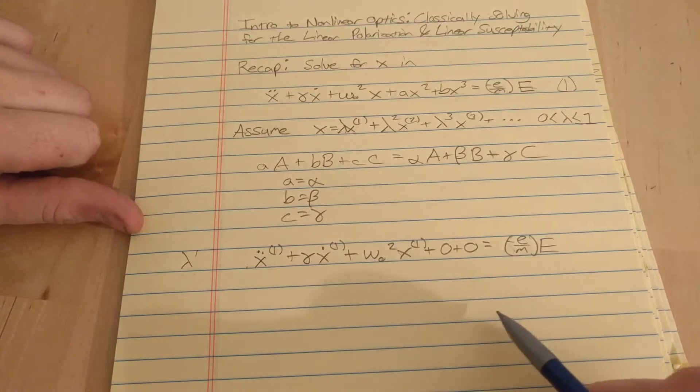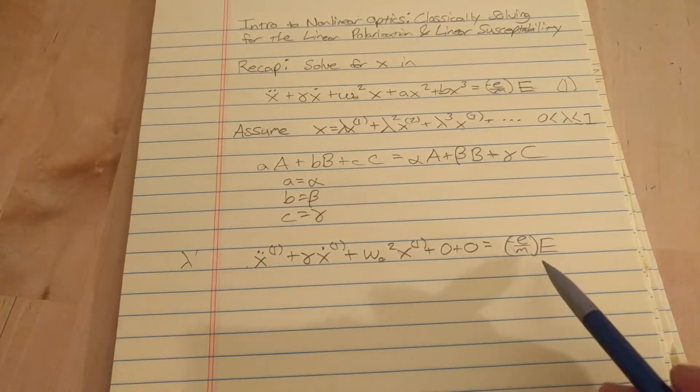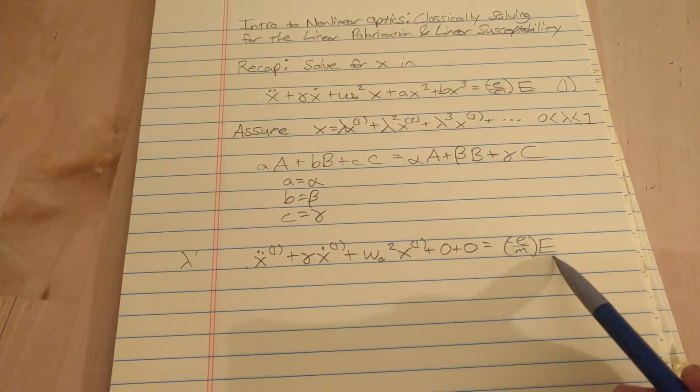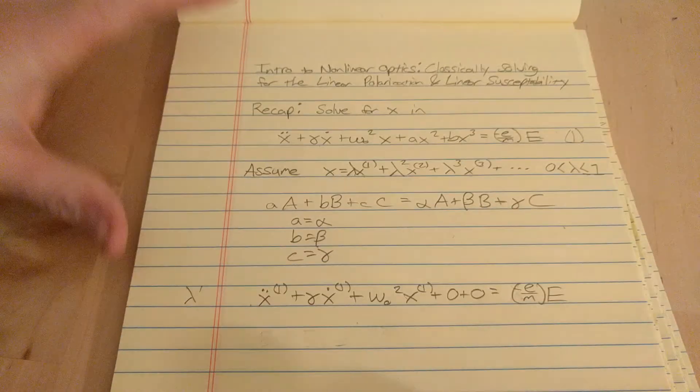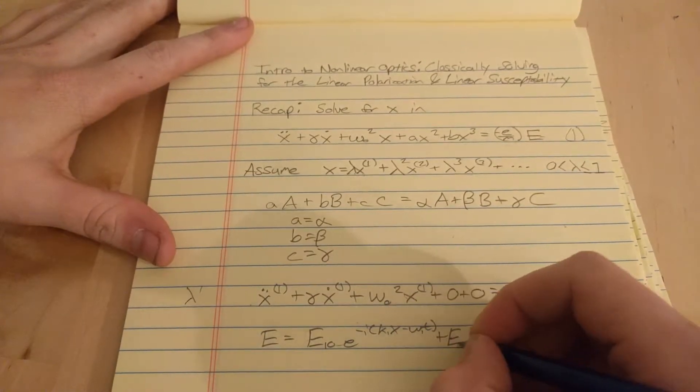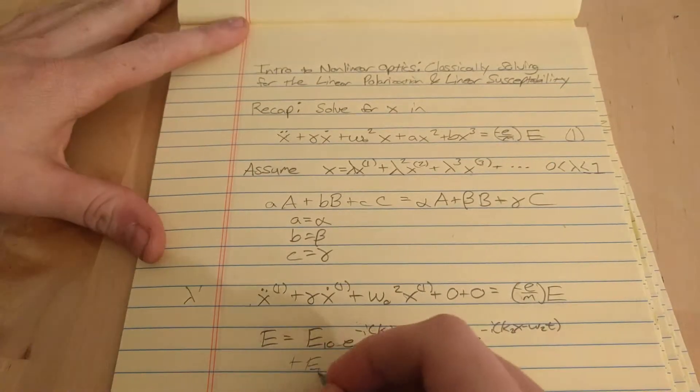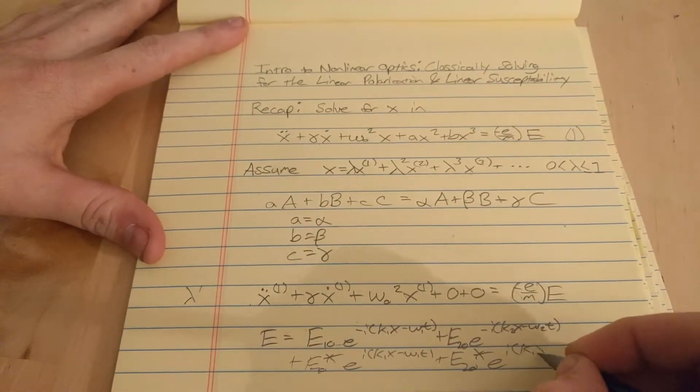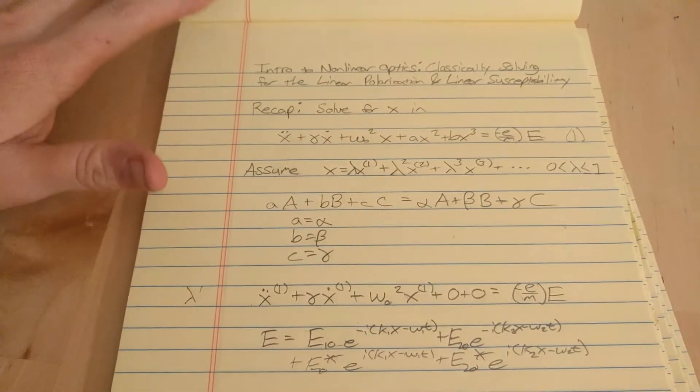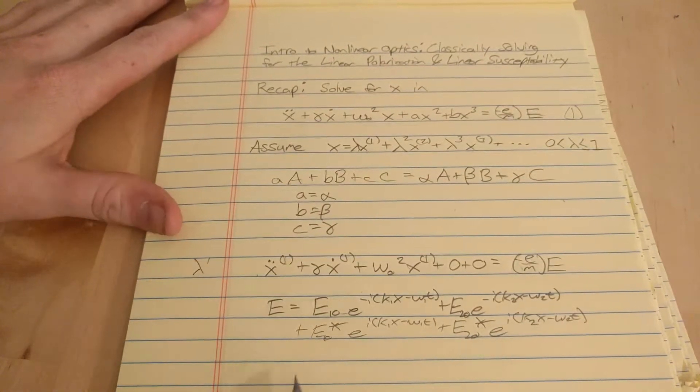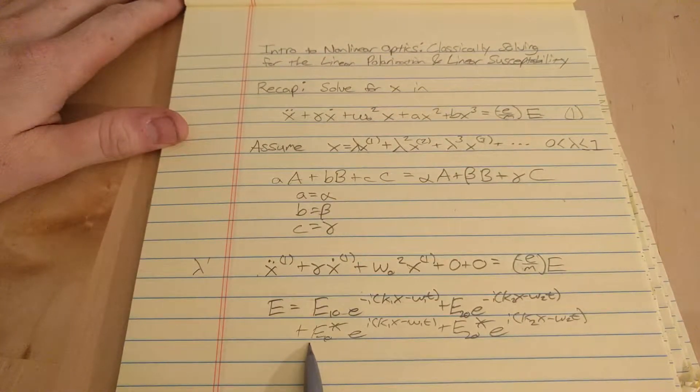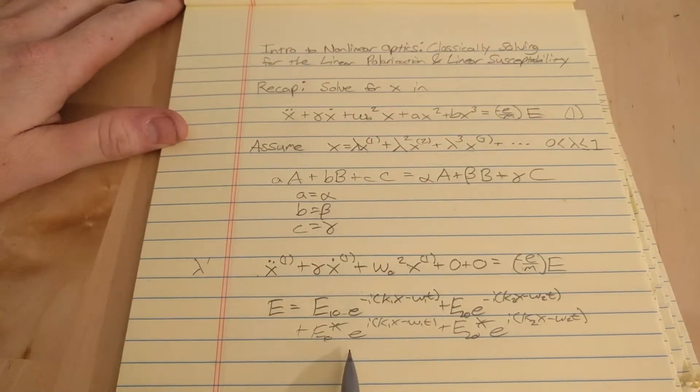So, what we do next is we're going to assume that our incident electric field, E, is made up of only two frequencies. Okay, so there, we just assumed that the incident electric field is made up of two frequencies.